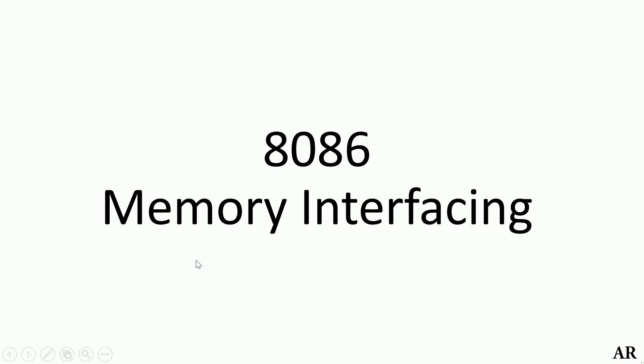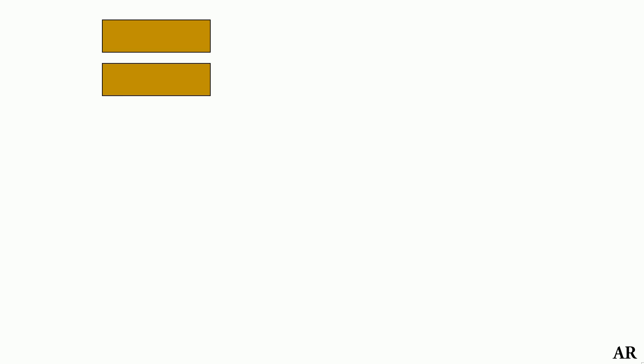First, let us understand the concept of address lines and data lines in any memory element. For this, let me start with an analogy. Consider that we have a classroom and there are two benches. We need to provide a unique ID to these benches so that the students can be easily directed to that specific bench. Hence, we start numbering: the first bench is address 0 and the second bench is address 1. In binary, that is binary 0 and binary 1. Thus, with 1 bit there are 2 possibilities — 0 and 1 — giving us 2 unique IDs.